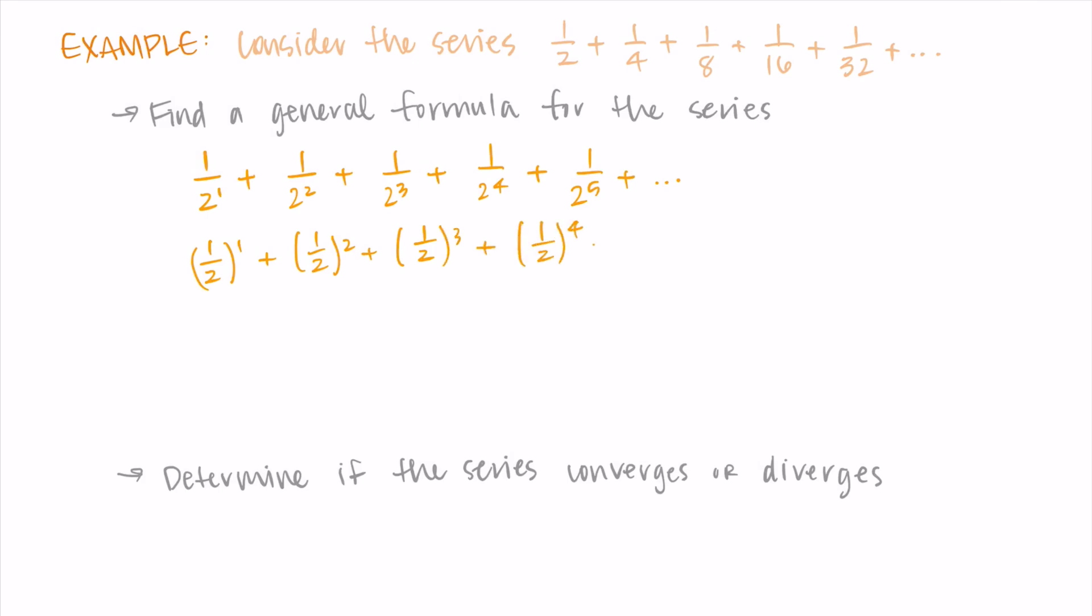Then to make this even simpler, I'm going to write the exponent on the outside of each fraction, because 1 to any power is just 1. So this is really (1/2)¹, (1/2)², (1/2)⁴, and (1/2)⁵, etc., with all of those things being added together.